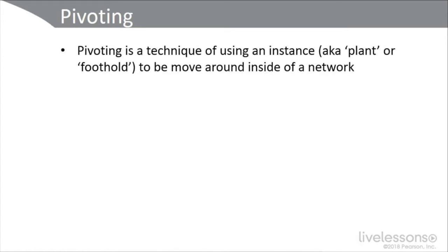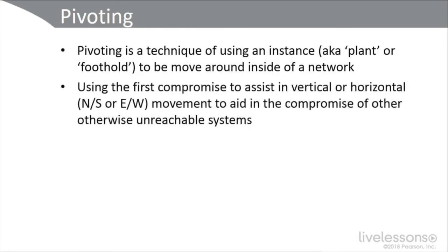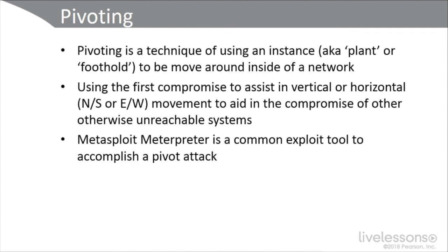Pivoting is a unique technique of using an instance — also referred to as a plant or a foothold — to move around inside the network. Basically, you're using your initial compromise to allow and even aid in the compromise of other inaccessible systems. Lateral movement is called east-west pivoting, and if we're doing privilege escalation, we call that north-south. In a certain scenario, we could use this for routing traffic from a normally non-routable network onto a routed network. Metasploit Meterpreter is a common exploit tool to accomplish a pivot attack.